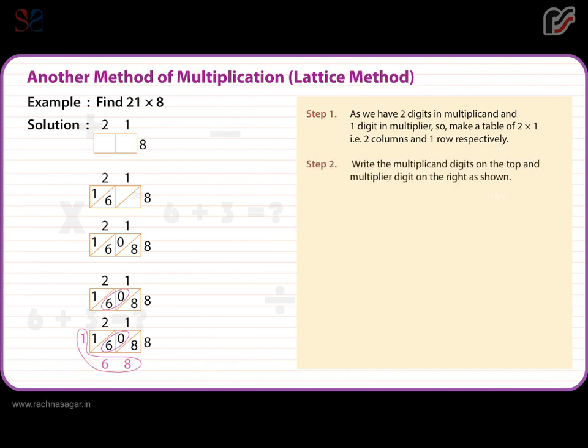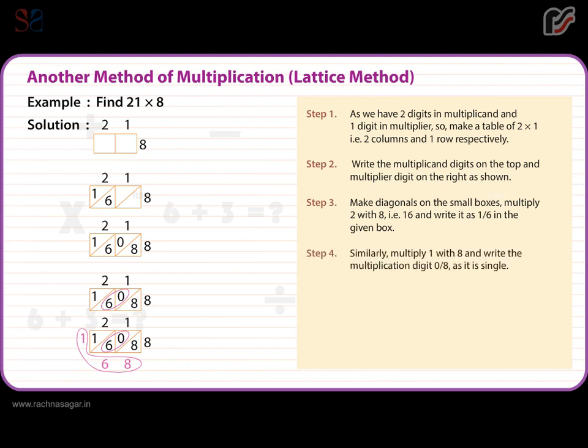Step 2: Write the multiplicand digits on the top and multiplier digit on the right as shown. Step 3: Make diagonals on the small boxes. Multiply 2 with 8, i.e., 16 and write it as 1 by 6 in the given box.